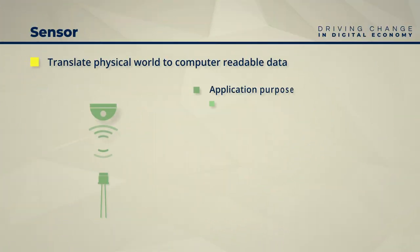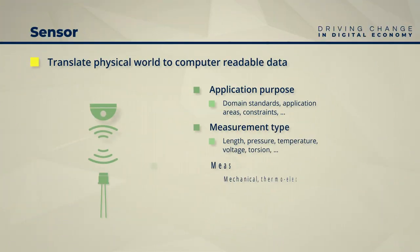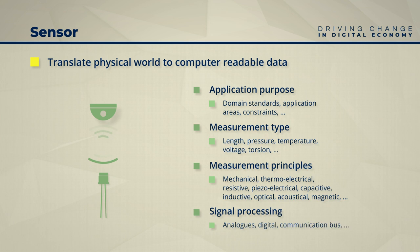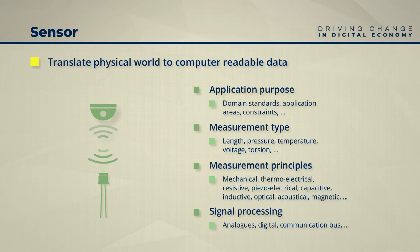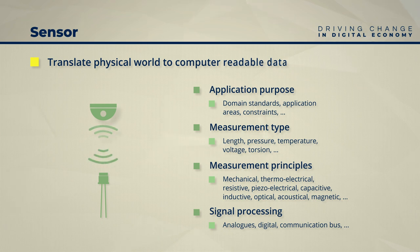Sensors translate the physical world to computer-readable data. They are based on different measurement principles like mechanical, piezo-electrical, acoustical, or magnetic. Sensors can measure different types of data like length, pressure, temperature, torsion, or voltages.